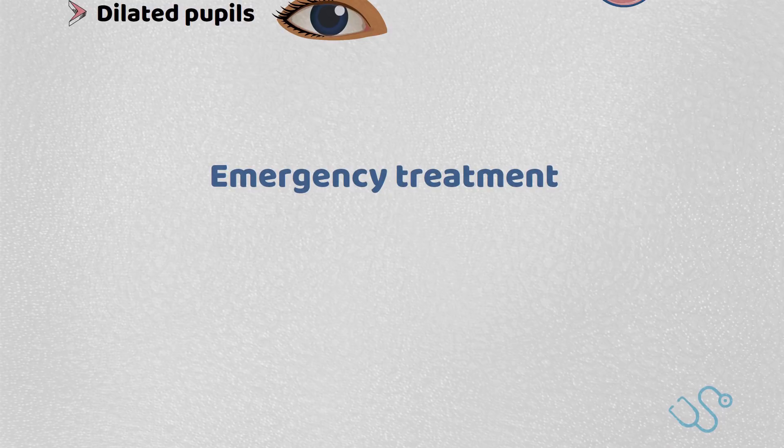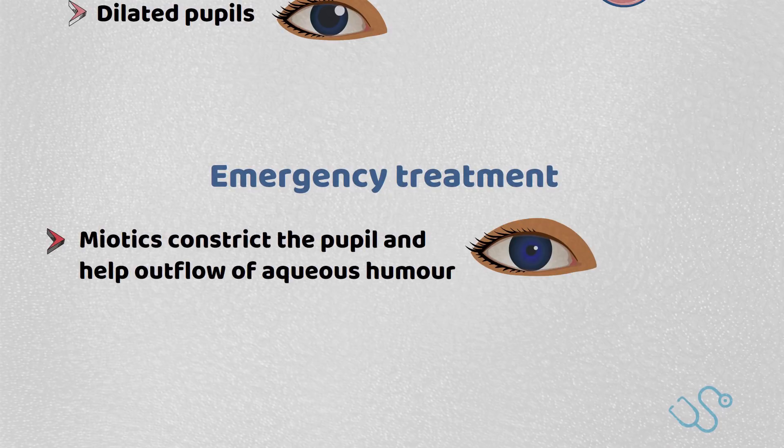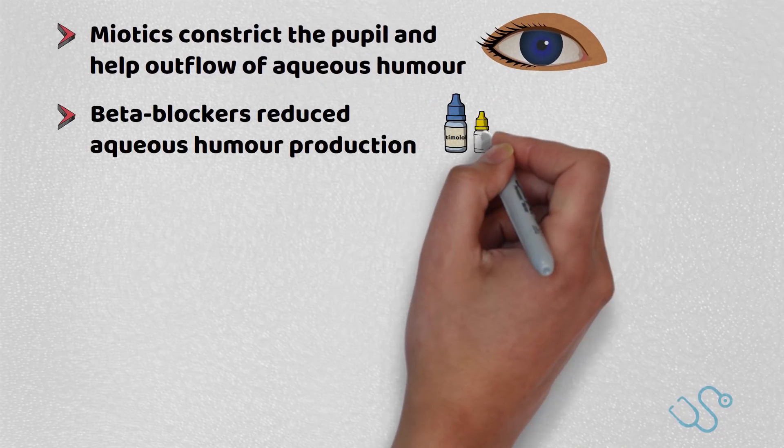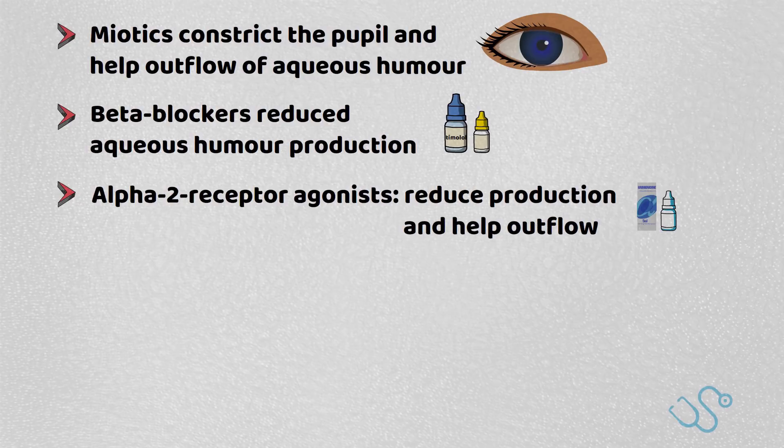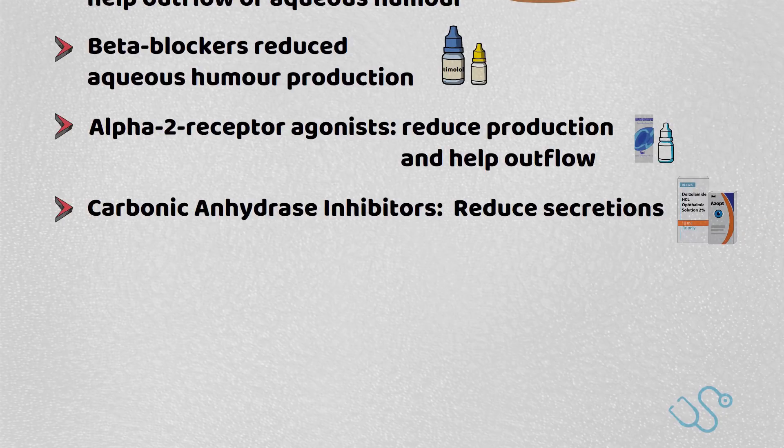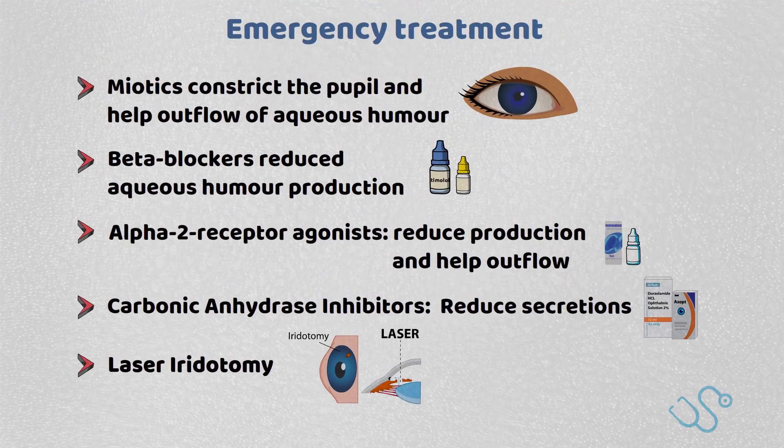In general, these patients will need an urgent eye assessment and often need emergency treatment, requiring usually a combination of miotics to help constrict the pupil and help outflow of aqueous humor, beta blockers to help reduce aqueous humor production, and alpha-2 agonists to help reduce production and help outflow of aqueous humor as well. Sometimes carbonic anhydrase inhibitors are used, and these are often given intravenously and may reduce secretions. Ultimate treatment is laser iridotomy, which is definitive because it creates a hole in the iris that helps outflow of the aqueous humor.